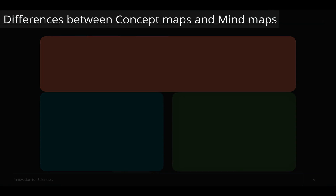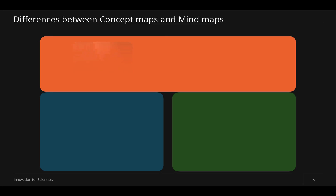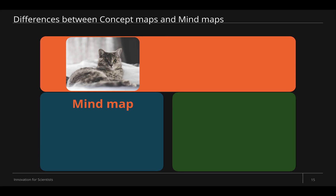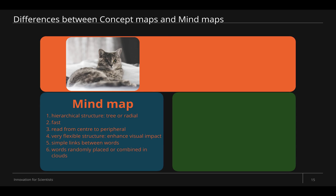Let's summarize the differences between concept maps and mind maps. For the mind map: you can build a hierarchical, tree-like, or radial structure. It's very fast and used when you want to think about a problem and explore all its sides creatively. It reads from the center to the periphery, has a very flexible structure, and its goal is to enhance visual impact. Simple links — lines and arrows — connect words, which are mostly placed randomly or combined in clouds. Mind maps are very specific tools for any type of creative thinking.